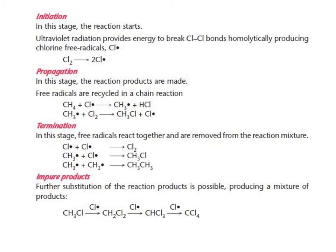So first of all, the ultraviolet light breaks the chlorine-chlorine covalent bonds homolytically producing chlorine free radicals. And then in propagation, you get the free radicals that are reacting with molecules to produce new free radicals and new molecules. In termination, free radicals that are left over react with each other and form molecules and as such are removed from the reaction mixture.